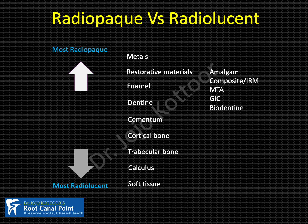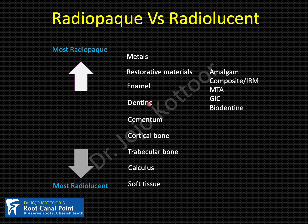Before interpreting a radiograph, let's briefly understand the radiopacity versus radiolucency of various restorative materials, tooth structures, and beyond. At the top are the most radiopaque materials, becoming more radiolucent as we go down. Starting with metals, then restorative materials: amalgam, composites, conventional MTA, GIC, and Biodentine. Note that GIC and Biodentine closely match the radiopacity of dentine, making them difficult to detect on a radiograph. Below restorative materials come enamel, dentine, cementum, cortical bone, trabecular bone, calculus, and soft tissue.